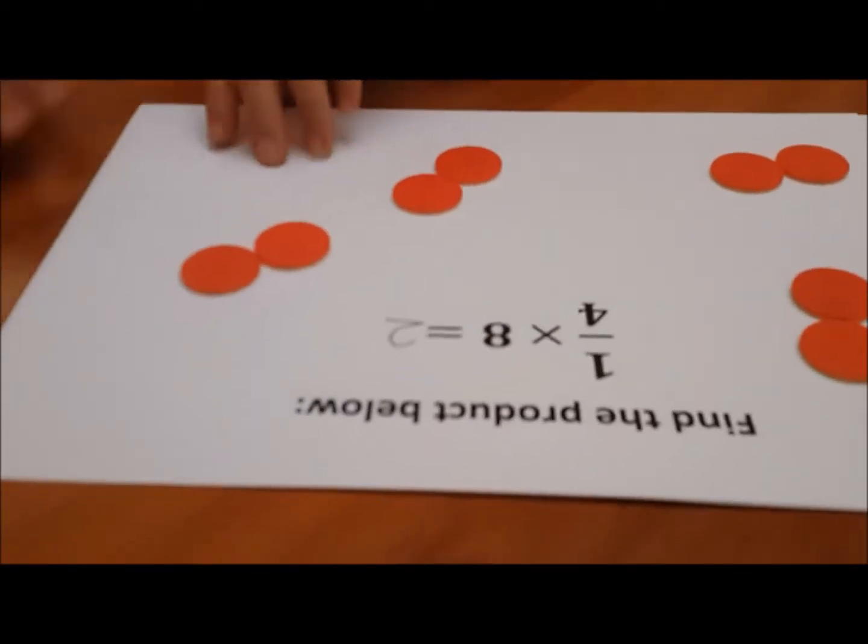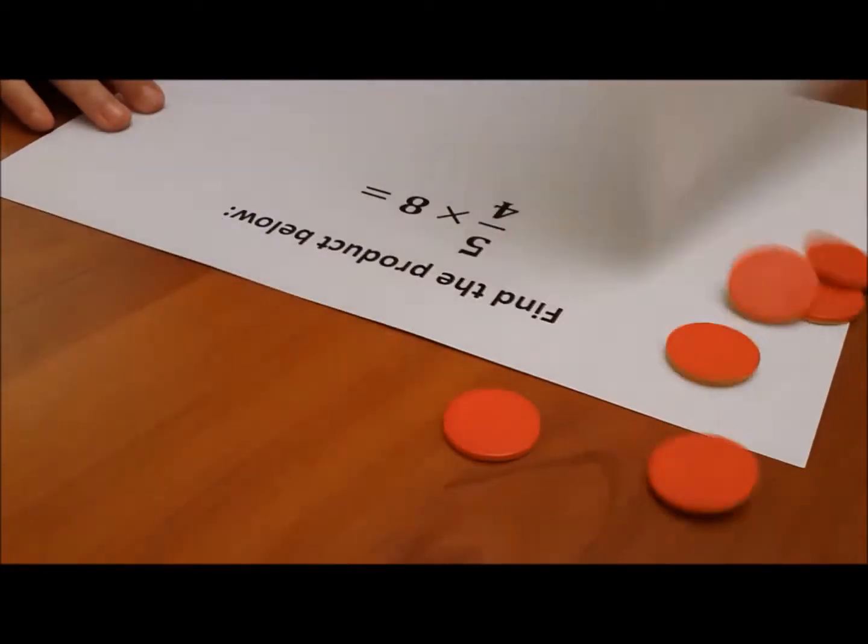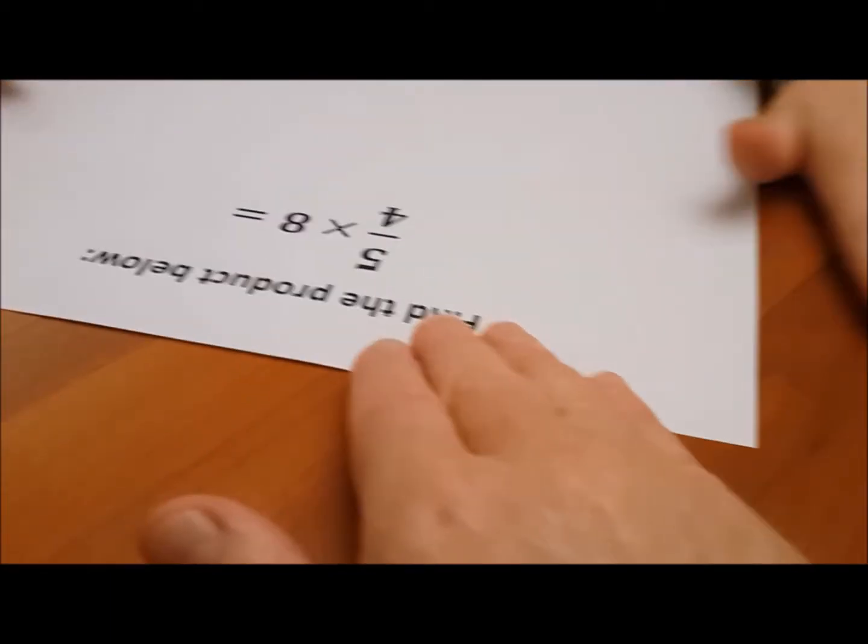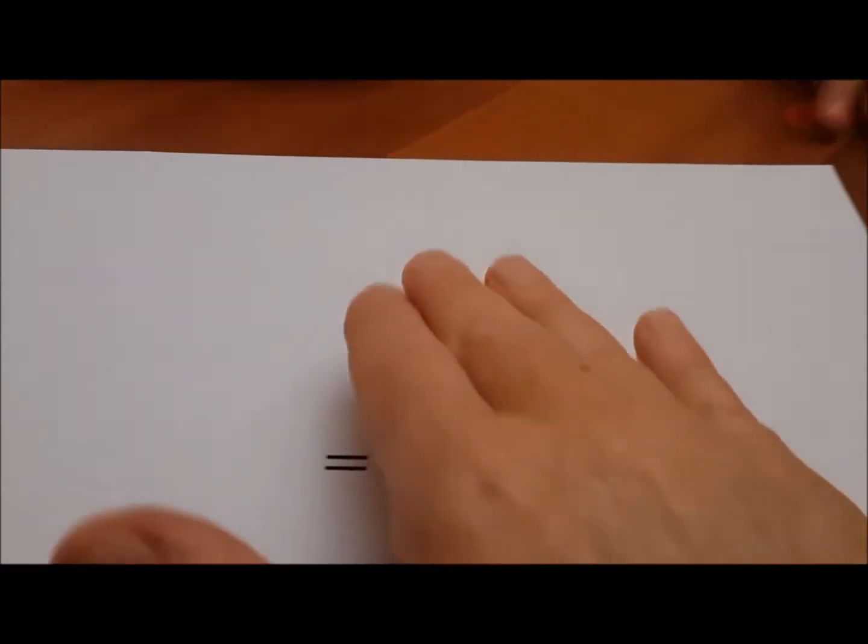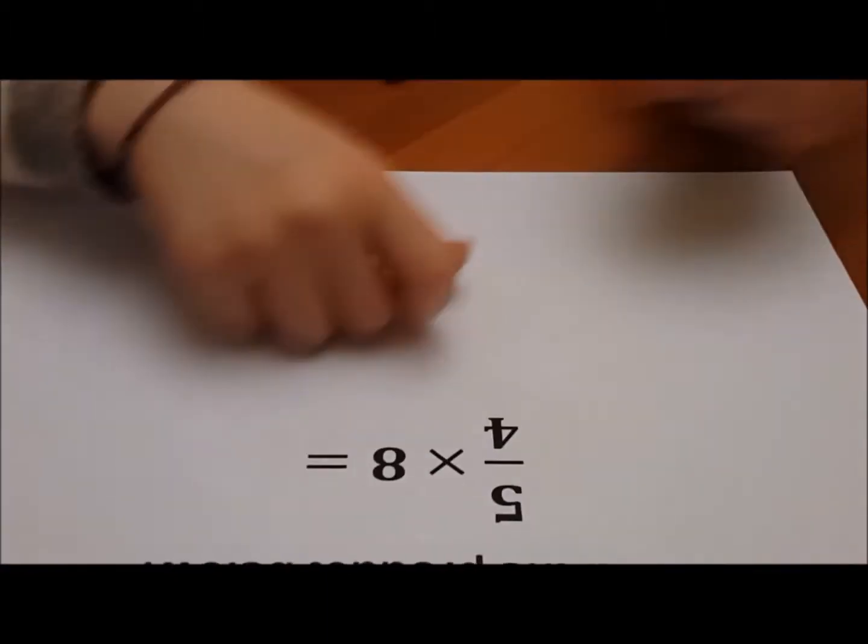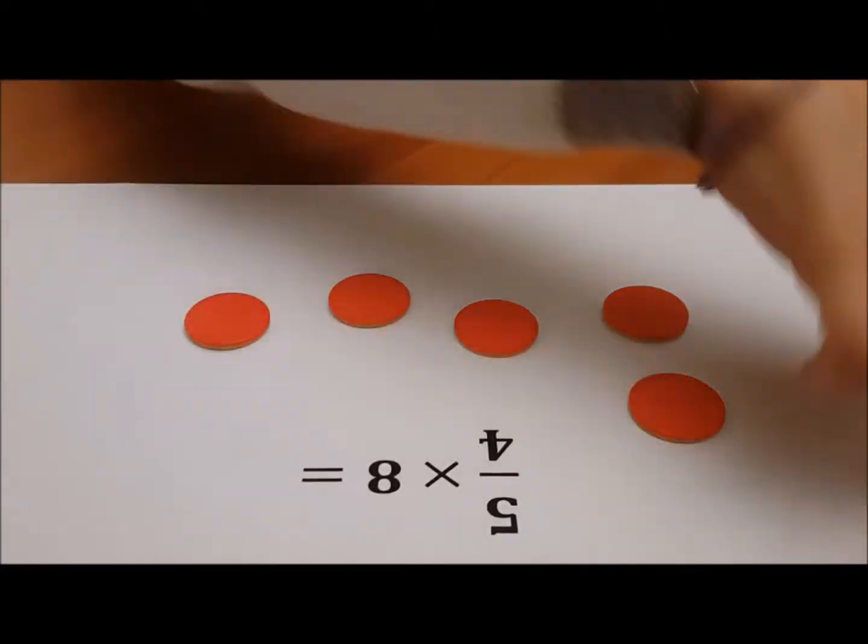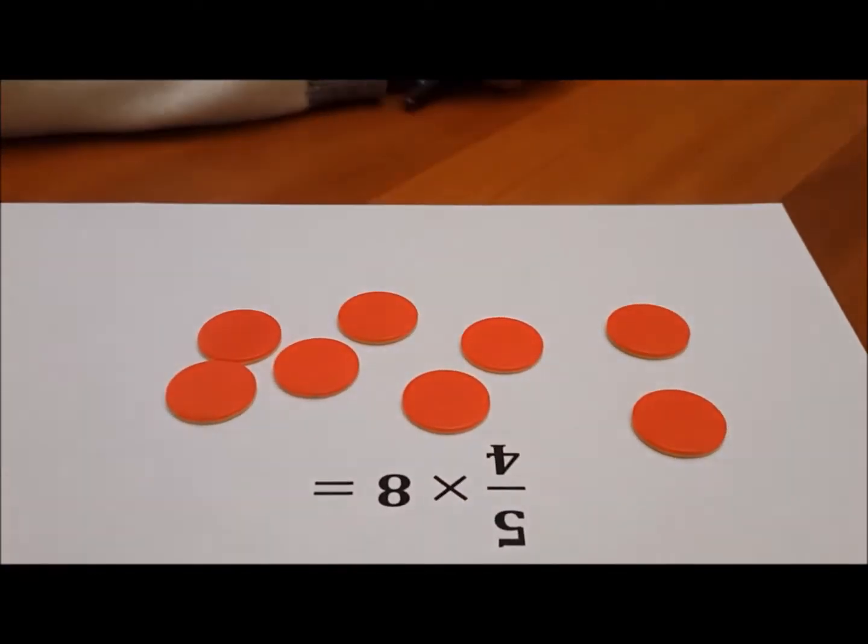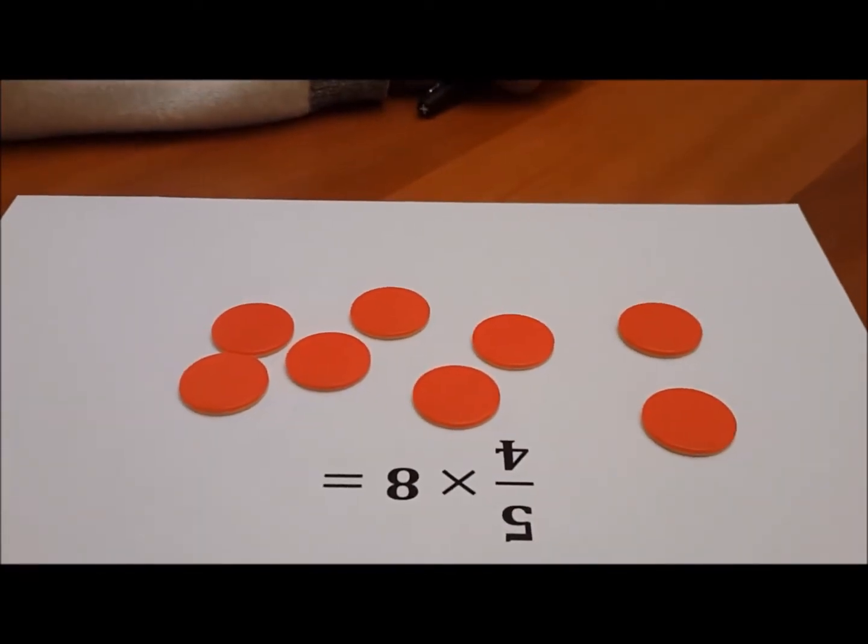Would you remove this paper and let's look at the one underneath. We now need to know how much are 5 fourths of 8. So begin with 8 chips one more time. Partition those into 4 equal parts, please.